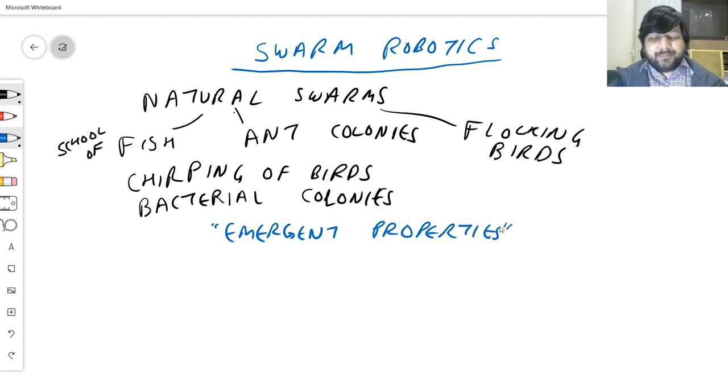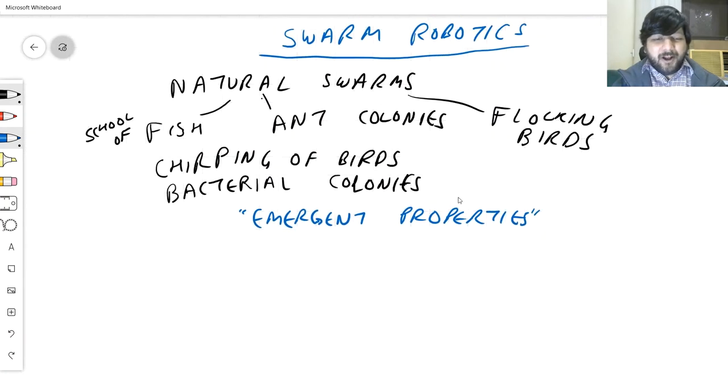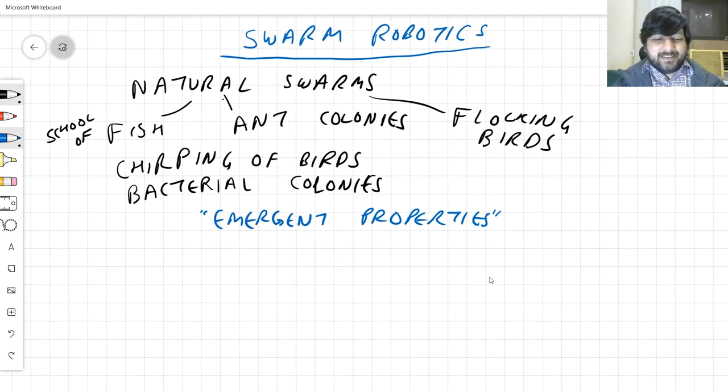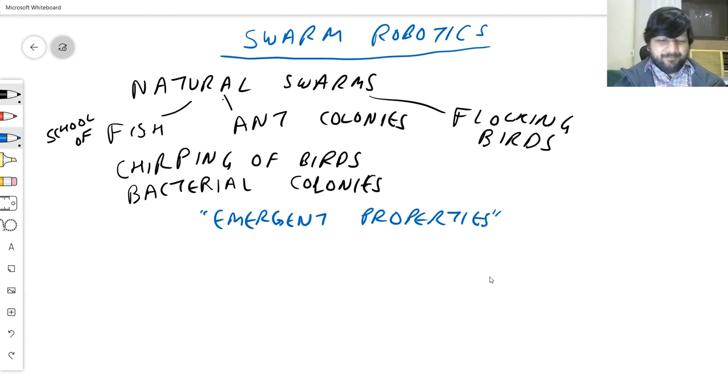Which means something is more than the sum of its parts. So one ant, it's extremely unlikely to get to your sweets which you have kept. One bird, it's extremely unlikely to migrate for miles and miles. One fish will hardly be able to avoid the predator and go to wherever it wants. So because all these animals operate along with each other, it gives them a very special advantage, and they are, remember, thousands and thousands of numbers.